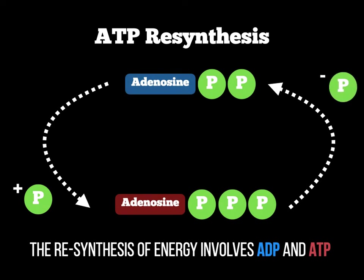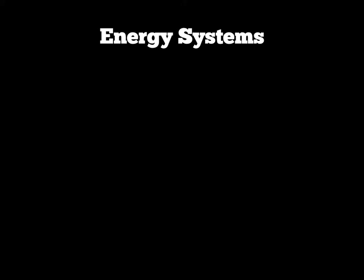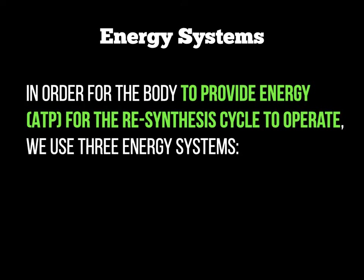The question people may have from the last screenshot was: where are we gaining these phosphates from? When ADP becomes ATP, where do we get that phosphate from? The answer is what we call the energy systems, and this is the focus of these next three series of screencasts. To provide energy in the form of the ATP compound for the resynthesis cycle to work, we need to utilise three different energy systems.